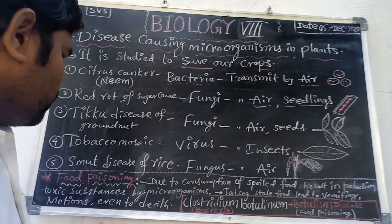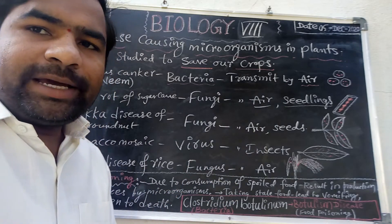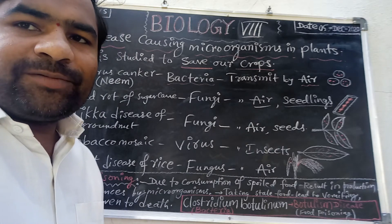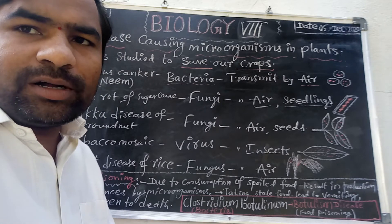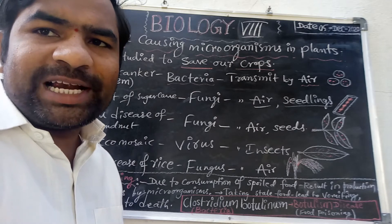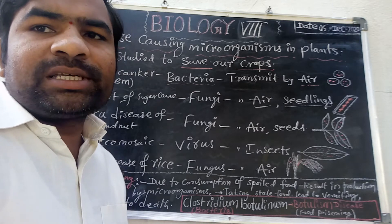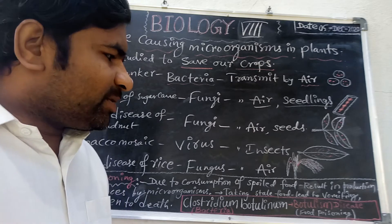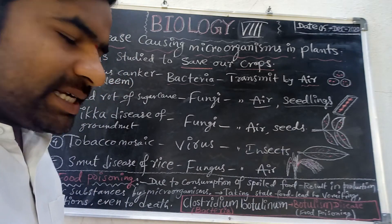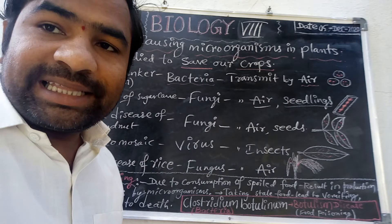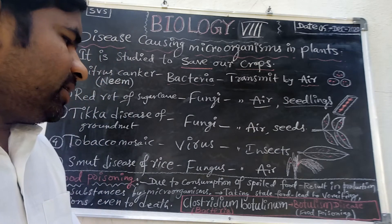Next is food poisoning. Many children and people are hospitalized complaining of stomach problems. This happens because they eat stale or spoiled food, which causes microorganisms to grow and produce symptoms like vomiting, motions, and sometimes even death. Food poisoning is very dangerous.